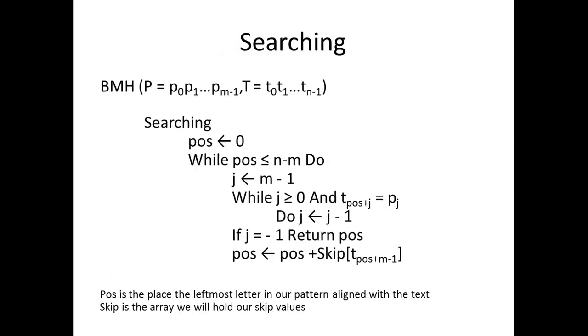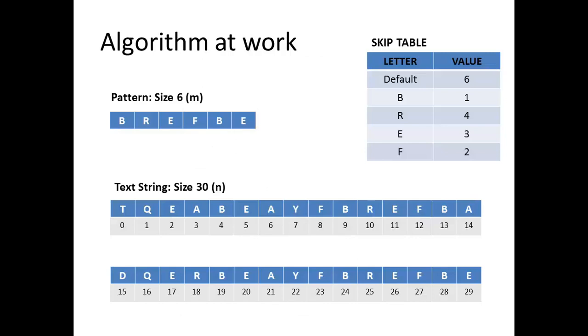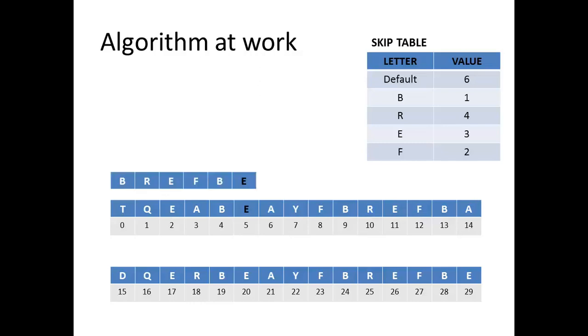Now that we have our skip table ready, we can move to the searching part, the pseudocode for which is given here. Let's see the algorithm at work. So we have our pattern and the skip table for it which we prepared earlier, and a text string of size 30. Now we start comparing letters starting from the right. E matches with E, same with B, move to F and A.